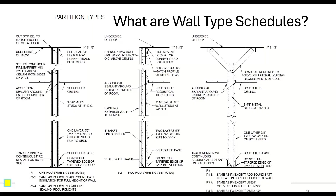So what are wall-type schedules? They're typically a sheet in the drawings that gives detailed information about how walls are constructed. On a floor plan, walls are typically shown as just two lines with no additional details about how the wall is made, what the requirements are for fire, acoustic, or structural. There's often a code in an oval or diamond shape adjacent to the walls keyed to a partition type on the wall-type schedule. You'll see designations like P1, P1-S, P1-A, P2, and P3 with variations.